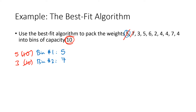Next on our list is a three. Here's where best fit differs: we look at all bins that can fit the three and find the tightest fit. Three could go into bin one, but bin two has less capacity remaining at three, making it a perfect fit. So we put three in bin two, dropping its capacity to zero. Next is a five — only bin one can hold it, so that's where it goes, dropping bin one's capacity to zero as well.